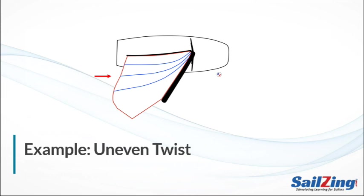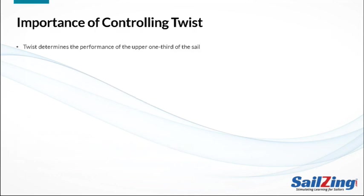Here's an unusual case of twist — you might call it uneven twist. You can tell by the change in the curvature of the leech at the arrow. I have heard this shape called mid-leech dump, and there's really no good reason for a sail shape like this. The upper leech of the sail is the loosest part, and it gets pushed around easily by the wind. So think of twist as determining the performance of the upper one-third of your sail.